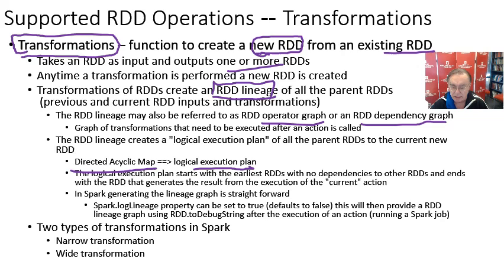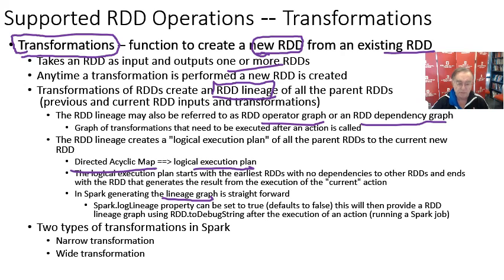You start with RDDs which are not dependent on anything, and you end up with an RDD that is dependent on all the previous RDDs. It's straightforward to know what the lineage graph is — you just have to record the executions that you run on Spark. You can set the log-lineage property to true, and it will give you a lineage graph after the execution of an action.